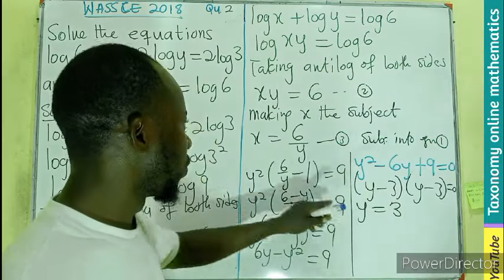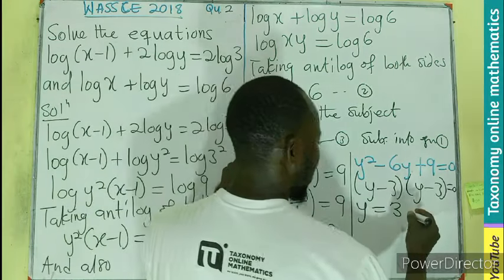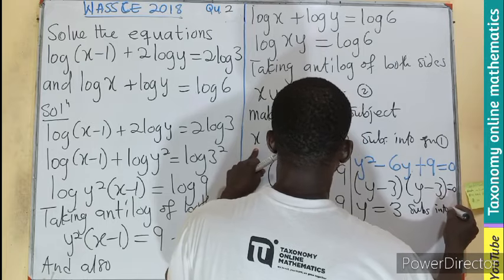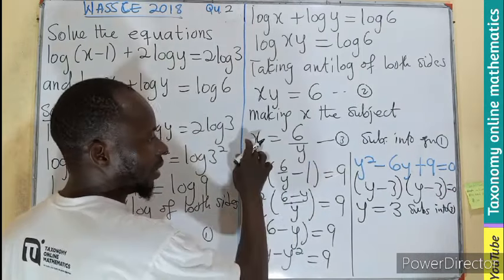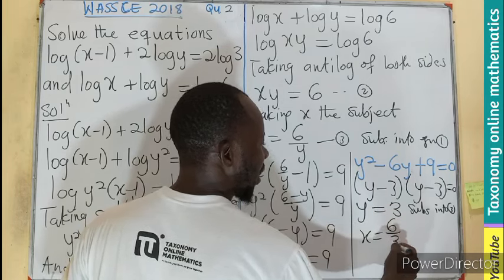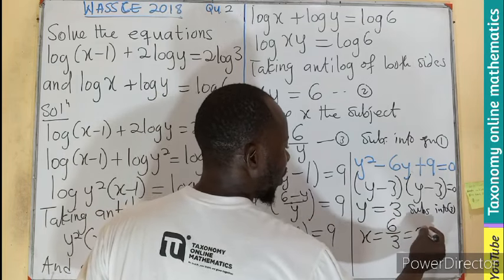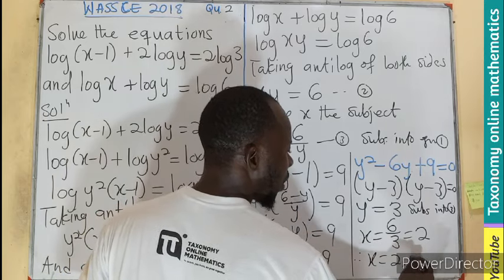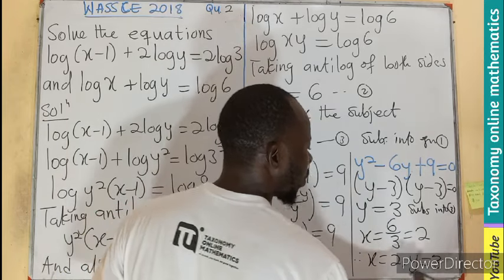So if y is equal to 3, then we sub into equation 3. This is equation 3. We see that x = 6/y. And y is 3. Meaning 2. Therefore, x is 2 and y is equal to 3.